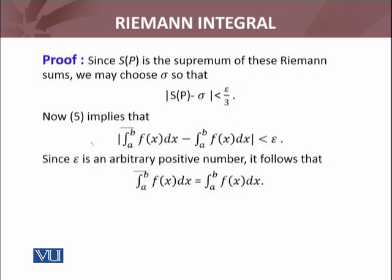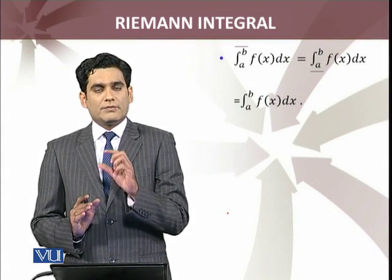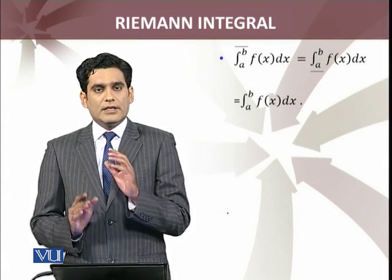Using this last inequality, we are able to find out, to get |upper integral - ∫ₐᵇ f(x)dx| < ε, where ε > 0 is an arbitrary number. From this inequality I can prove, I can conclude that the upper integral equals the Riemann integral. I've proven one way, that upper integral equals ∫ₐᵇ f(x)dx.